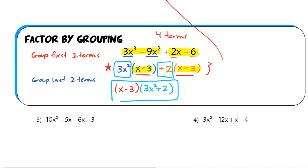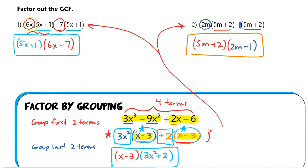When you see four terms, the goal is to group the first two together, take out the GCF, and rewrite what's left over. Then do the exact same thing for the last two terms. If you're doing it correctly, you'll always see the same expression inside both sets of parentheses. Pull that out and you're done — we're just adding one extra step compared to before.